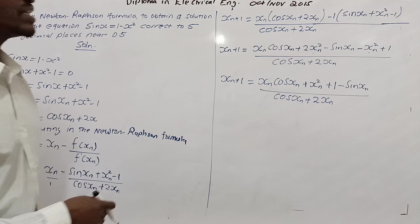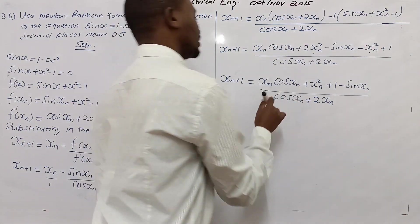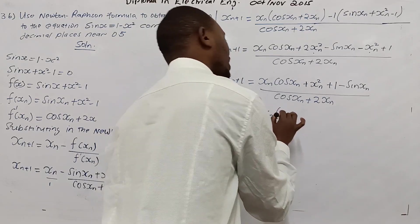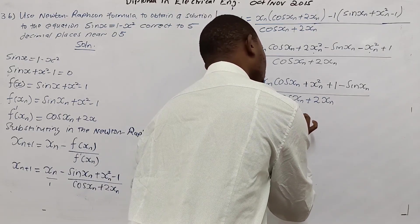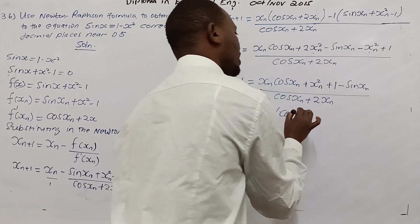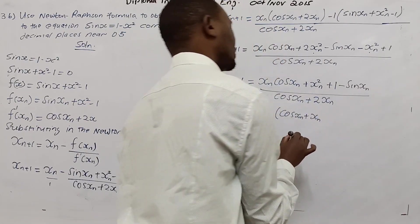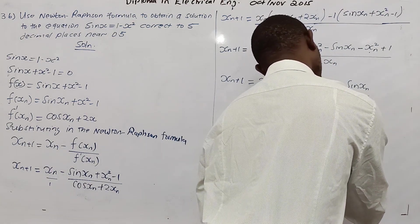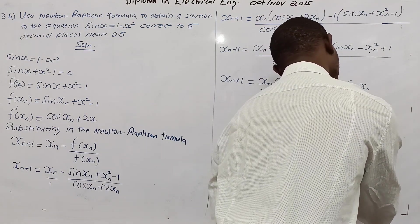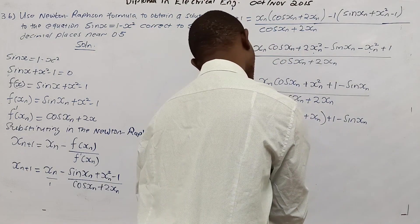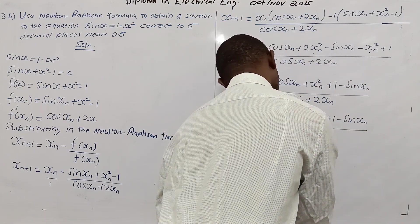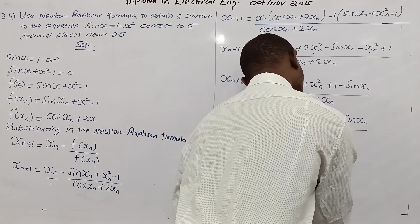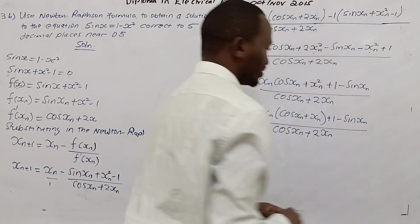This one becomes xn cosine of xn minus 2xn squared. Then I will start with sine xn. But you know that I have to rearrange. I'll factor this xn. I'll say this is now xn, open bracket, cos xn plus 2xn, close that bracket plus 1, and then finally subtract the sine xn, all over cos of xn plus 2xn. I think now we are ready to start calculating.